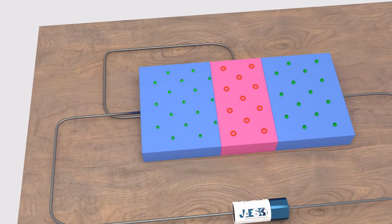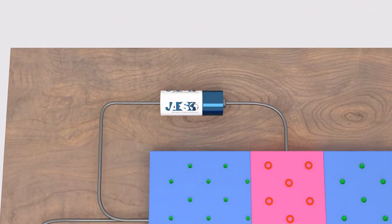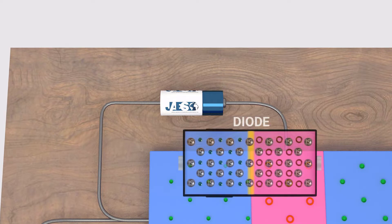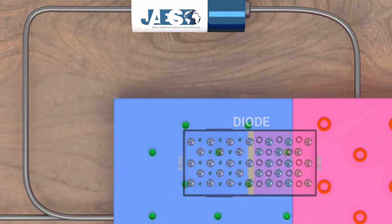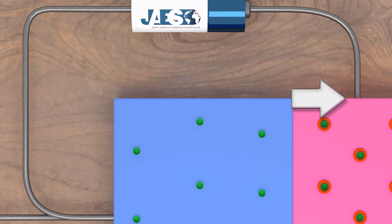If we try to connect a battery as shown, with enough voltage to overcome the barrier potential, we get a diode in a forward bias condition. Also in this case, a significant amount of electrons will migrate from the N-side to occupy the holes on the P-side.